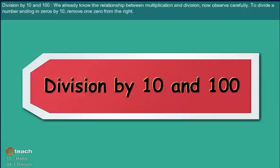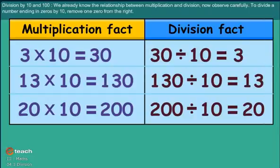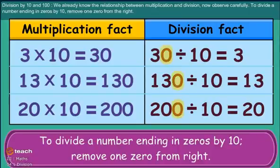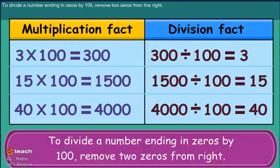Division by 10 and 100. We already know the relationship between multiplication and division. To divide a number ending in 0s by 10, remove 1 zero from the right. To divide a number ending in 0s by 100, remove 2 zeros from the right.